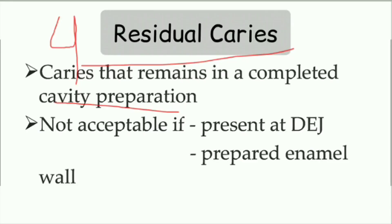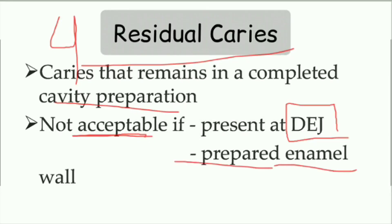Residual caries is usually not acceptable. If we prepared a cavity and some caries is present toward the DEJ, it will lead to secondary caries. So we have to remove those residual caries. Also, when we prepare a cavity wall or enamel wall, we have to remove all the caries lesion from the wall as well.